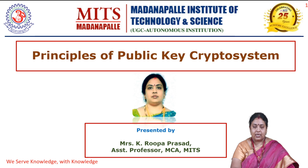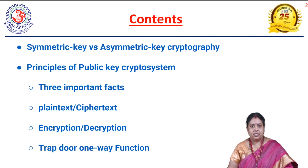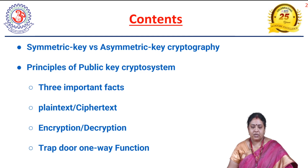First we will see what are the contents that we are going to discuss today. We are going to discuss about the symmetric key or the asymmetric key cryptography — the differences between the two types of cryptographic systems. Then we are going to talk about the principles of public key crypto system, including plaintext and ciphertext, the encryption and decryption process, and the trapdoor one-way function.